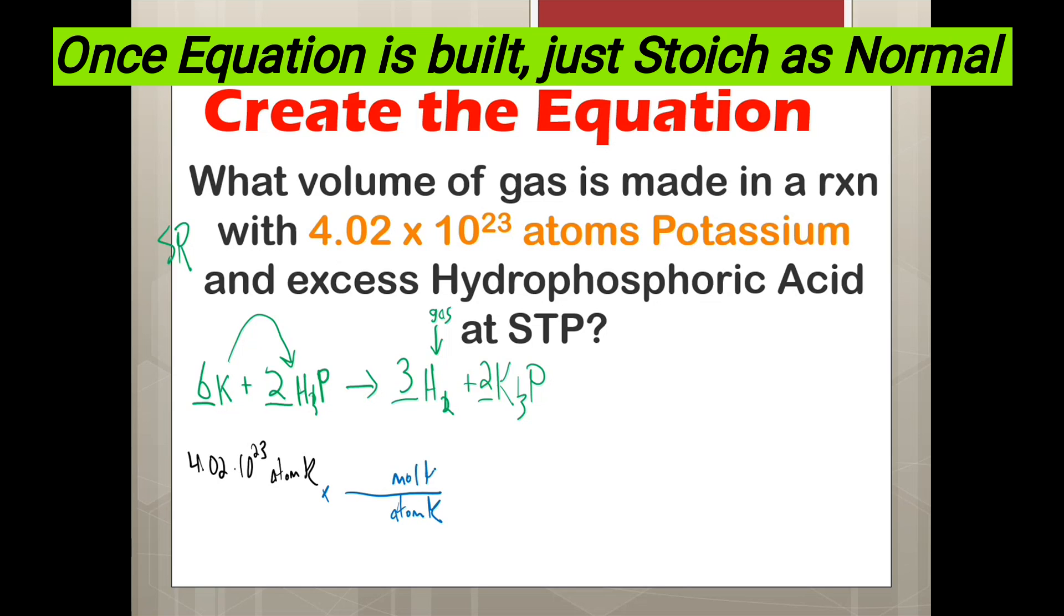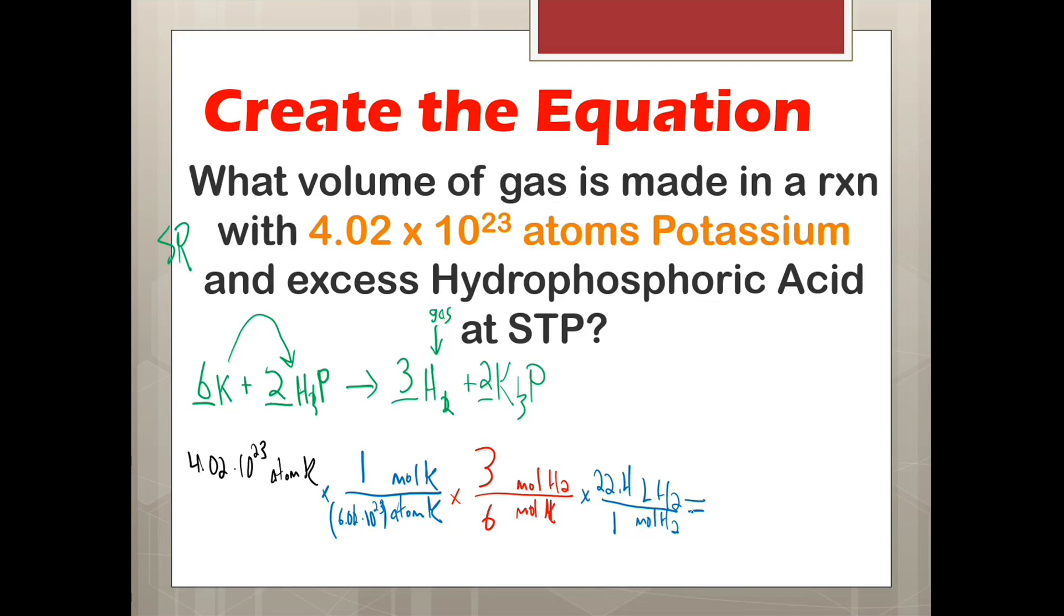So we're going to have our 6.02 times 10 to the 23rd. I don't know why my screen keeps doing that, but I'll fix it later, to one mole. Now that we are in mole, we can use stoic to go from our moles of K to our moles of H2, since that is our gas. By the problem, there are three H2s for every six Ks. And then I'm back to the mole, because I do not want moles of H2. I want liters of H2. For every one mole, there is 22.4 liters, because this is a mole conversion.